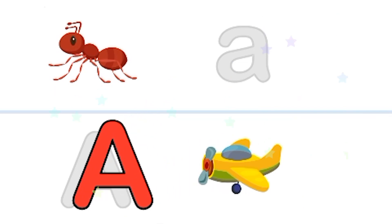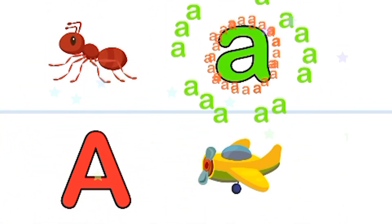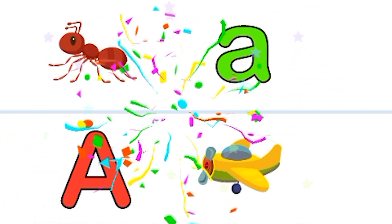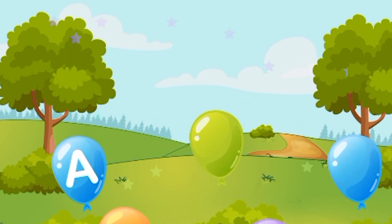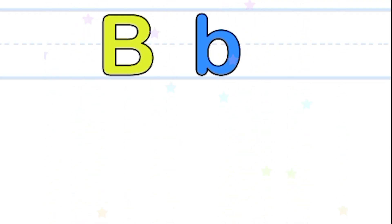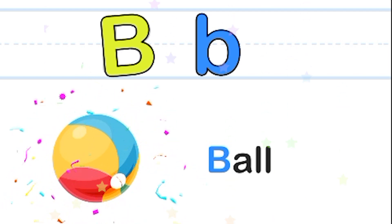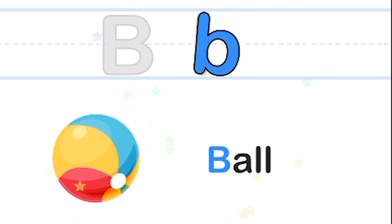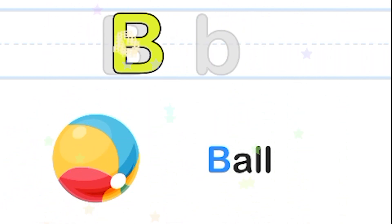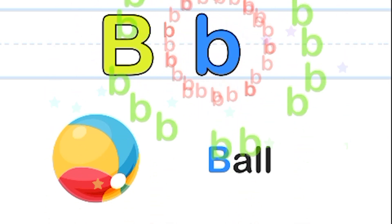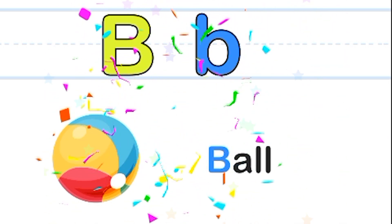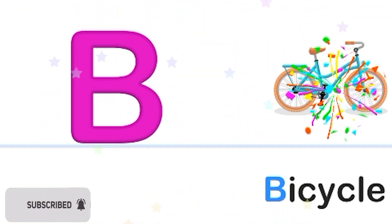A. Wait. Bye-bye. Let's start. B is for ball. B. Wow. B is for bicycle.